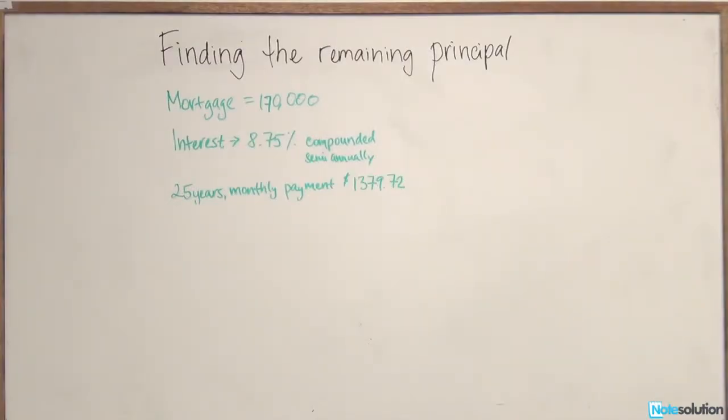Here we have an intermediate level question relating to finding the remaining principal on a mortgage. We have a situation where a couple took out a mortgage for $170,000.